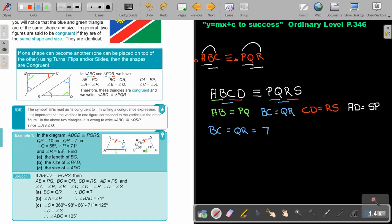And then the next one, the size of angle BAD. Now, if I write the angles, angle A will be equal to angle P. Angle B will be equal to angle Q. Angle C will be equal to angle R. And the last one, angle D will be equal to angle S.